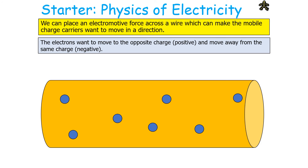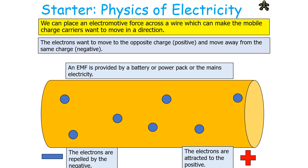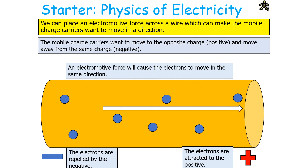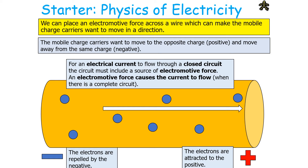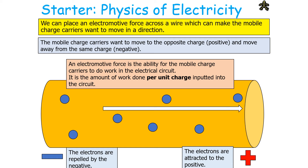The electrons want to move towards the opposite charge — to the positive — and move away from the same charge, the negative. An EMF, provided by a battery, power pack, or mains, causes the electrons to be attracted towards the positive and repelled from the negative, making the mobile charge carriers move in the same direction and producing a current. For an electrical current to flow through a closed circuit, the circuit must include a source of electromotive force. The electromotive force is the ability for the mobile charge carriers to do work in the electrical circuit — the amount of work done per unit charge inputted into the circuit.